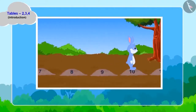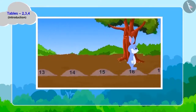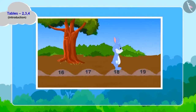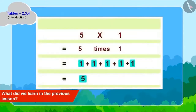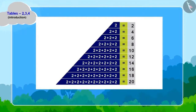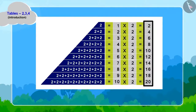Children, do you find something unique in bunny's jumps? Two is being added to every jump of bunny. And what did we learn in the previous lesson? Repeated addition can also be written in the form of multiplication. Like this, another unique thing has been made — it becomes the table of two.